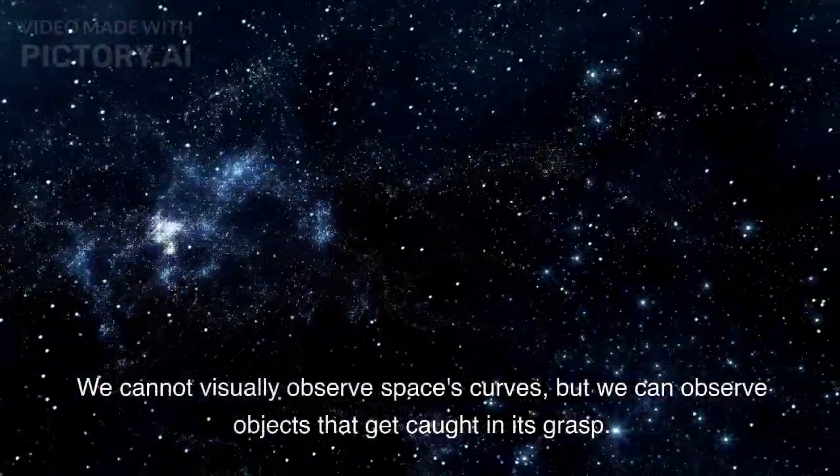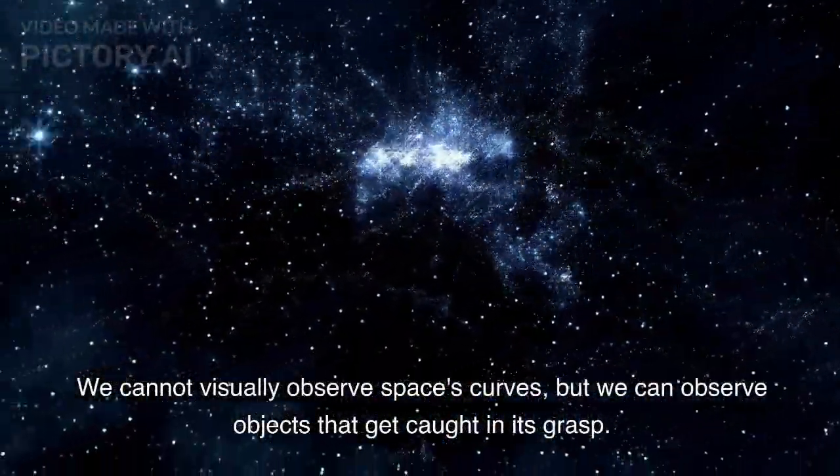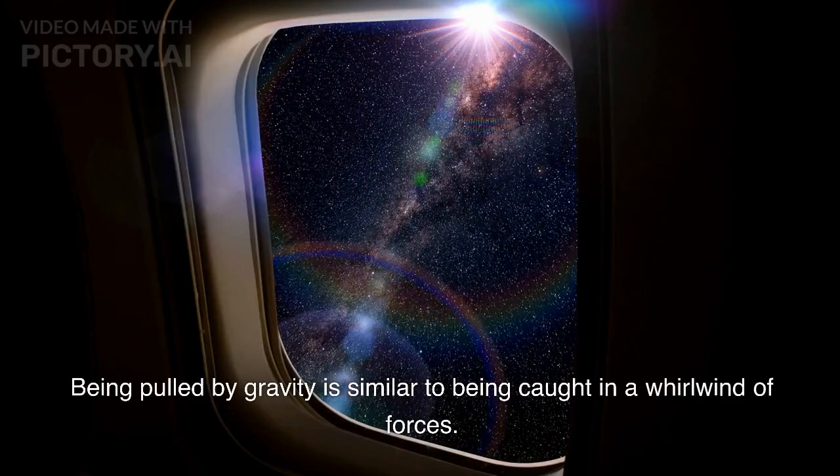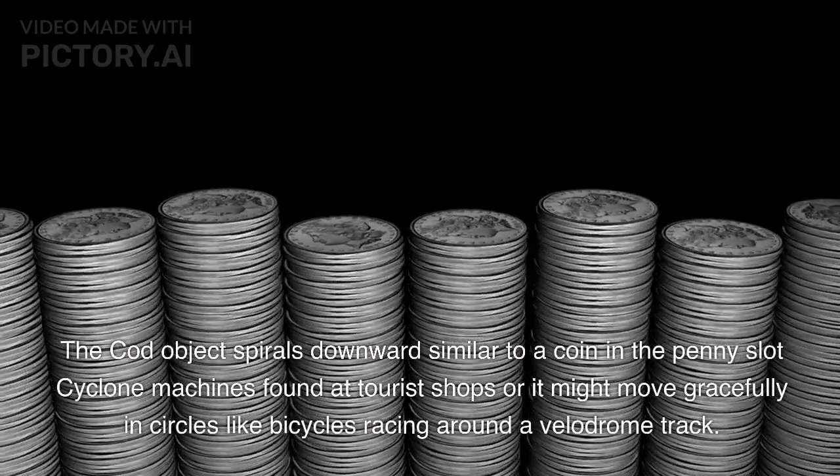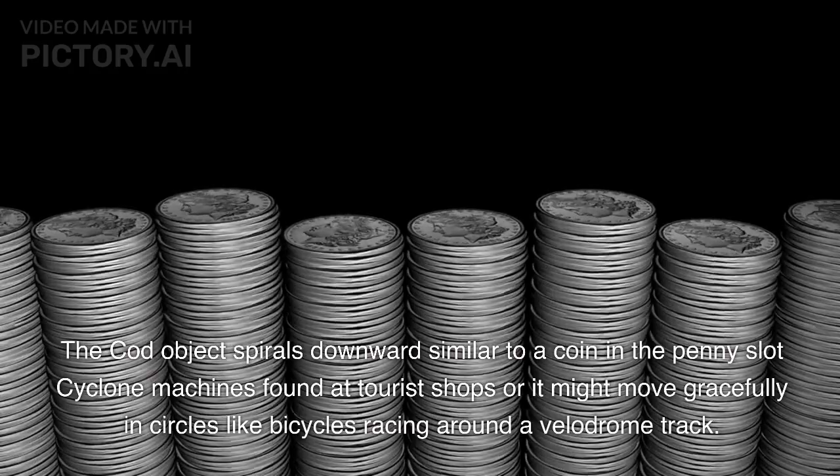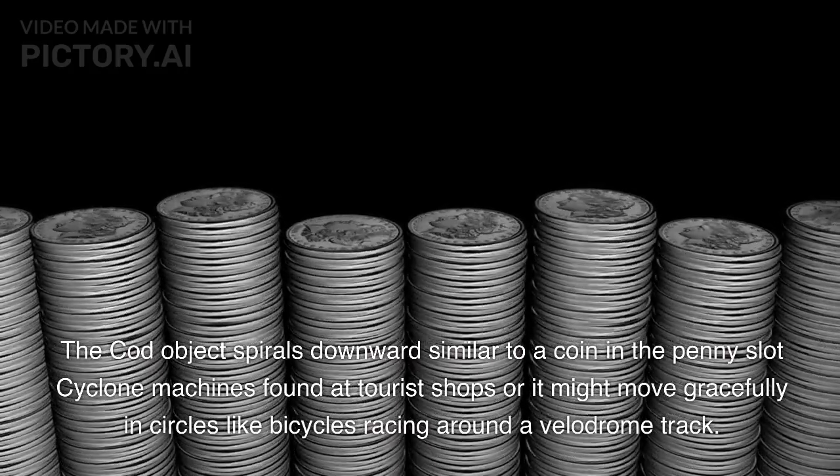We cannot visually observe space's curves, but we can observe objects that get caught in its grasp. Being pulled by gravity is similar to being caught in a whirlwind of forces. The object spirals downward similar to a coin in the penny slot cyclone machines found at tourist shops, or it might move gracefully in circles like bicycles racing around a velodrome track.